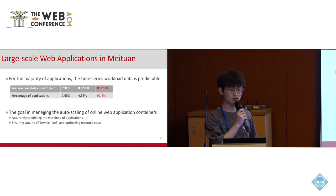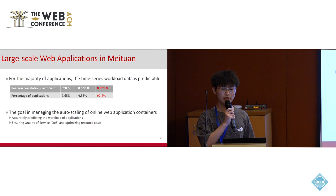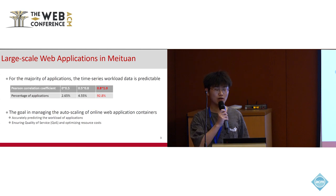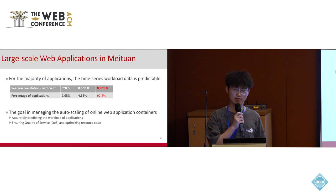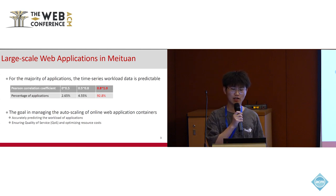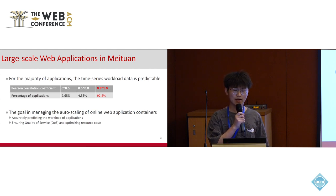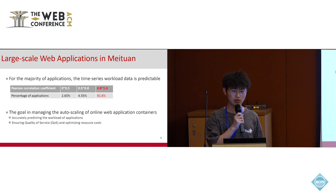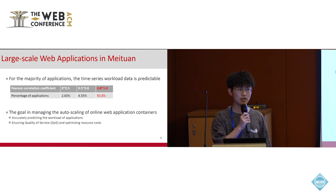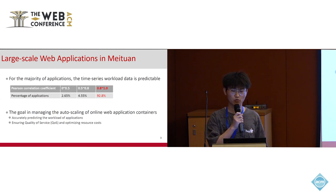Meituan is a large-scale technology company in China that operates many web-related applications, such as delivery, hotel, and traveling services. Our sampling test shows that 92.8% of the applications had Pearson correlation coefficient greater than 0.8 for their copious data over two consecutive weeks.